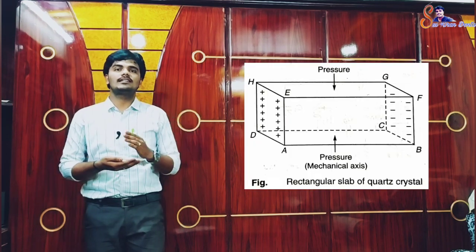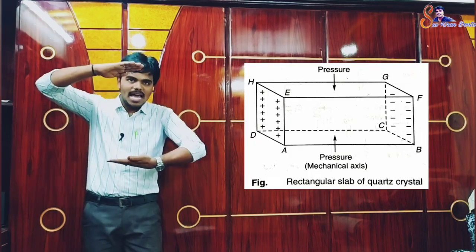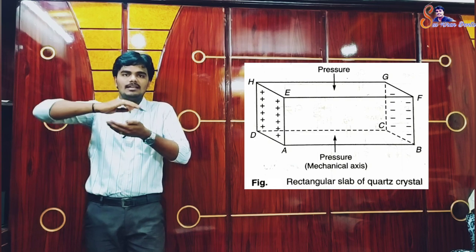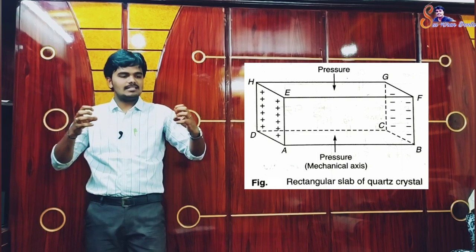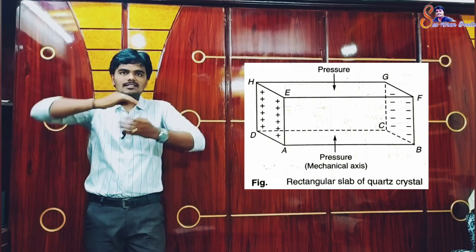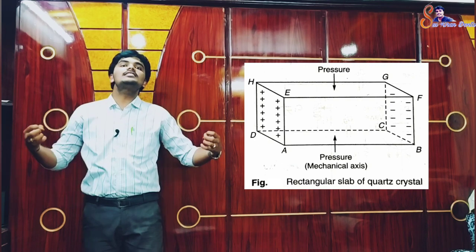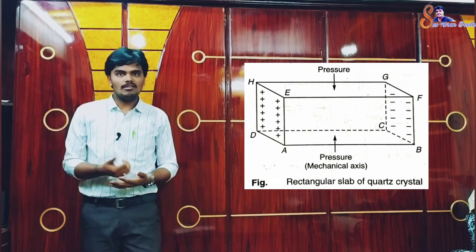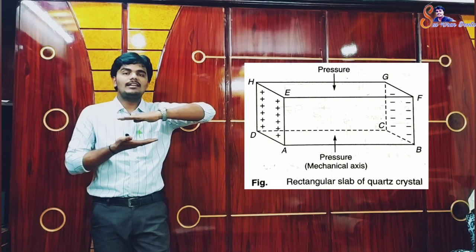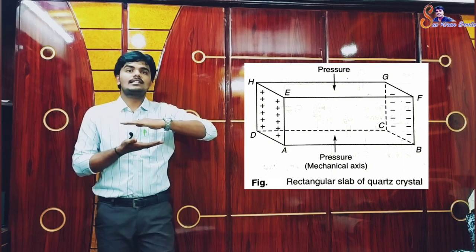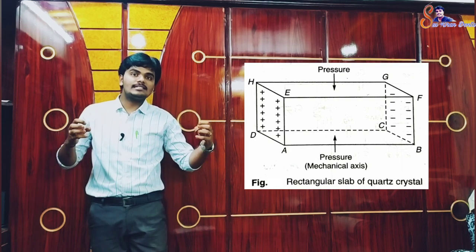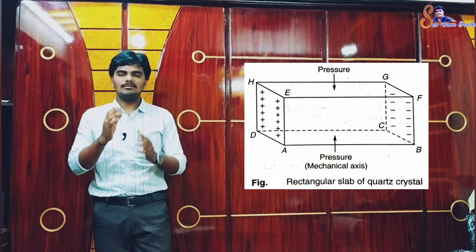When we compress the crystal along one axis, we develop a pressure-applied axis which is the mechanical axis, and a potential difference is developed along the electrical axis.